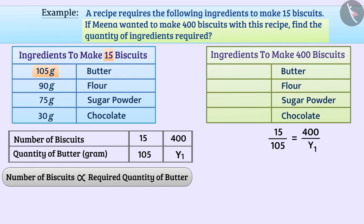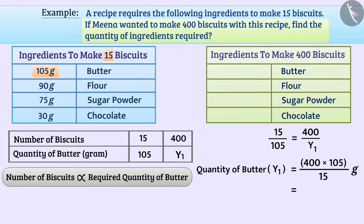Therefore, the quantity of butter, y1, is equal to 400 multiplied by 105 divided by 15 grams, which equals 2800 grams, equal to 2.8 kilograms.